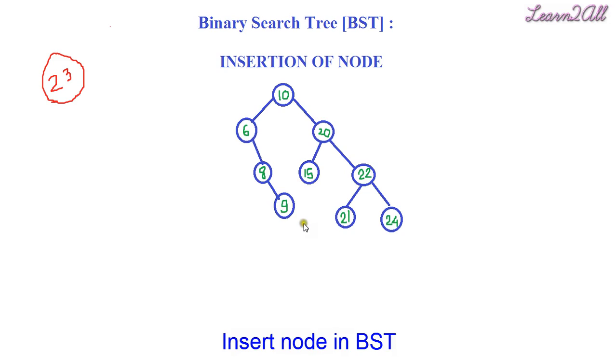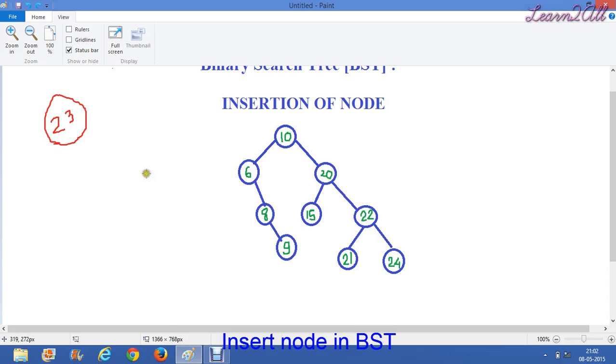Here you can see that a binary search tree, one type of tree is given here. And now we want to insert element 23 in this tree. For that we have to proceed some procedure. Now I will explain you all the procedure.